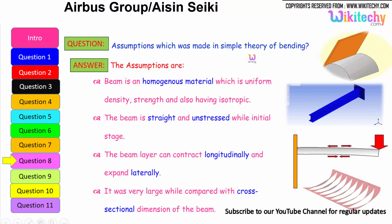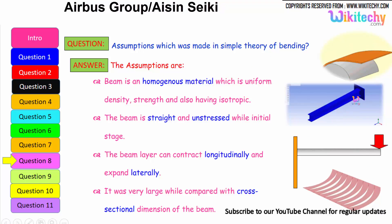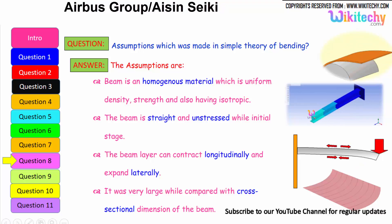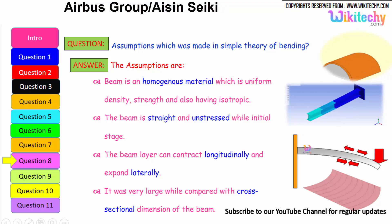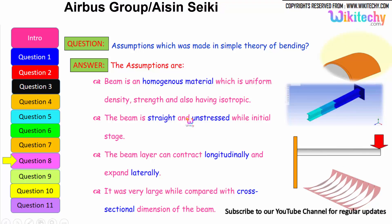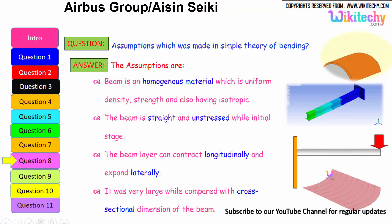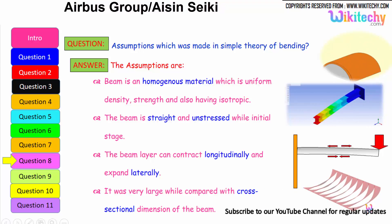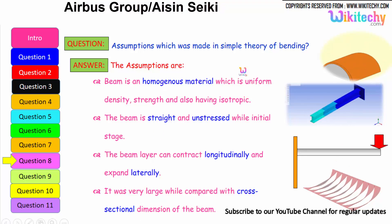What is the assumption made in the simple theory of bending? The assumptions are: the beam is a homogeneous material with uniform density, strength, and is also isotropic. The beam is straight and unstressed at the initial stage. The beam can contract longitudinally and expand laterally. The radius of curvature is very large when compared with the cross-sectional dimension of the beam. These are some of the assumptions we have to make for the theory of bending.